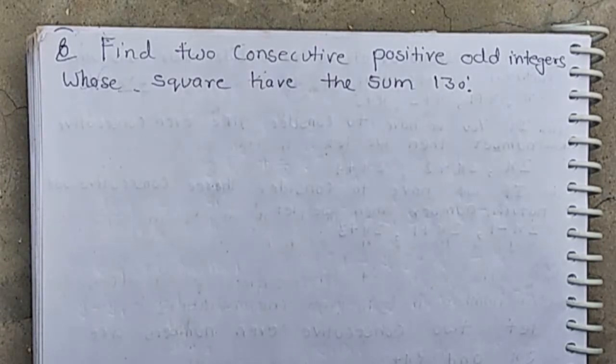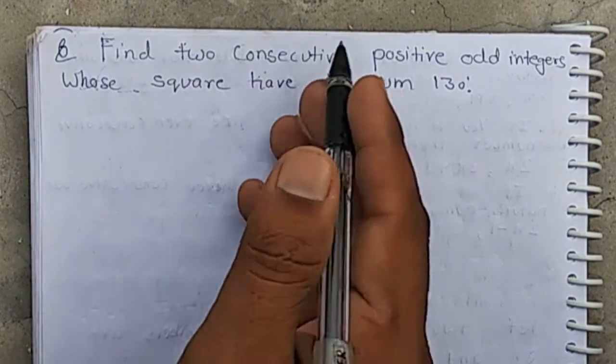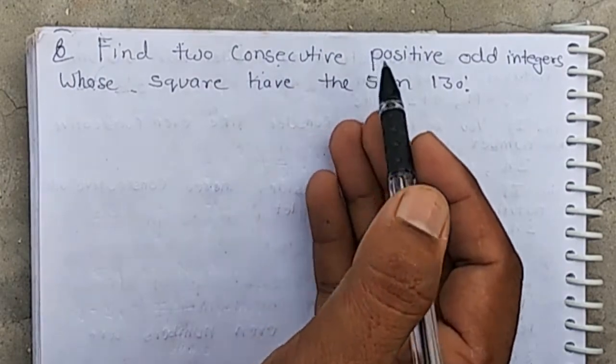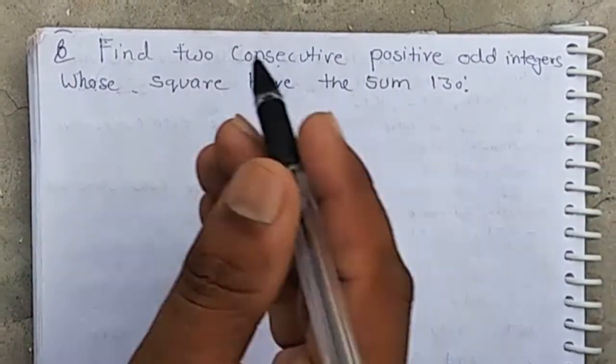The question says: find two consecutive positive odd integers whose squares have the sum 130.